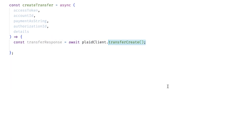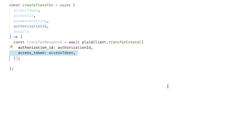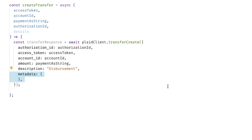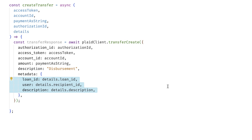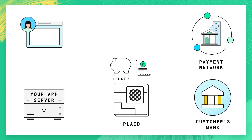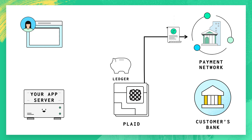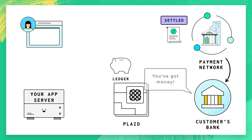Now create the transfer by calling transfer/create, passing along the authorization ID, as well as the access token, account ID, amount, a short description, and any metadata you feel like associating with the payment. At this point, your payment is marked as pending, meaning it's in Plaid's system, and Plaid will remove those funds from your ledger's balance. Plaid will then send the request off to the network, and your payment will be marked as posted. Sometime after that, the transfer is marked as settled, which means the user will see the transaction in their account and it will be available to spend shortly, depending on their bank.